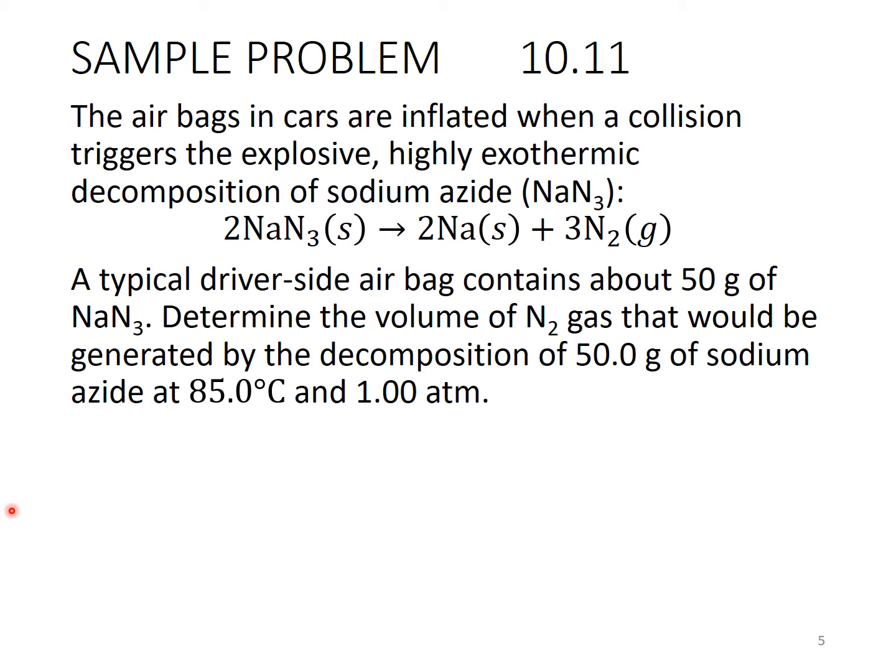All right. So we have grams of sodium azide. We want to get to moles of gas, moles of nitrogen. So that's something we're really familiar with already, right? We can go from grams of sodium azide to moles of sodium azide with the molar mass, and then do the mole to mole conversion. There's two moles of sodium azide for three moles of nitrogen gas. That will get us to moles of nitrogen gas. So moles of nitrogen gas can then be used in PV equals NRT. Remember that's the ideal gas law. So you need to use moles of a gas.